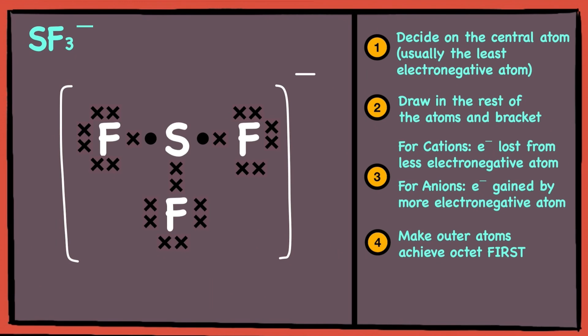Finally, we can now make the central sulfur atom achieve octet. Since sulfur originally has 6 valence electrons and used up 2 electrons to form covalent bonds with the 2 fluorine atoms, it has 4 electrons left. Again, we can draw in 2 pairs of electrons. So, this is how the dot and cross diagram for SF3- will look like.